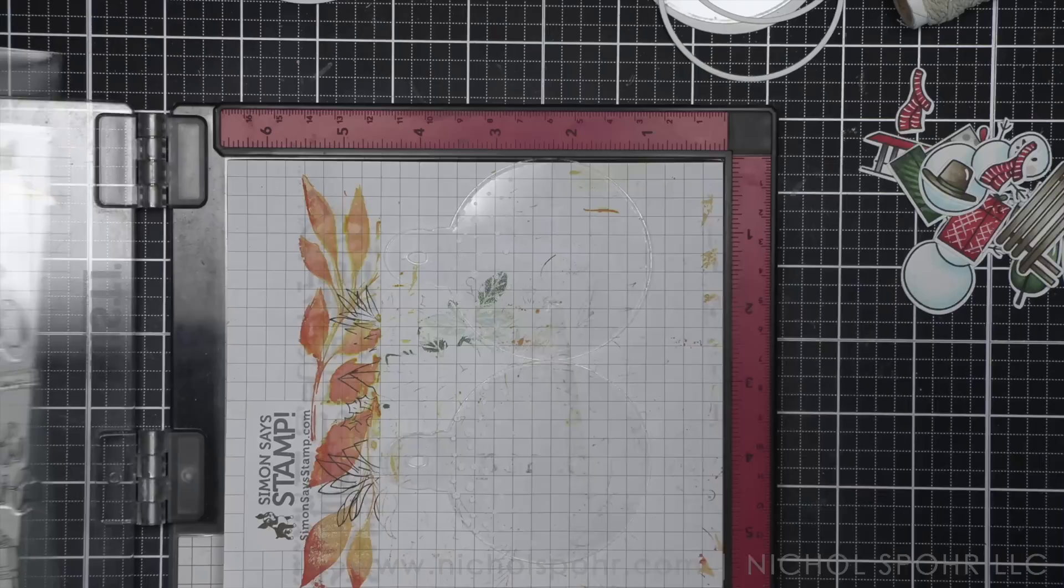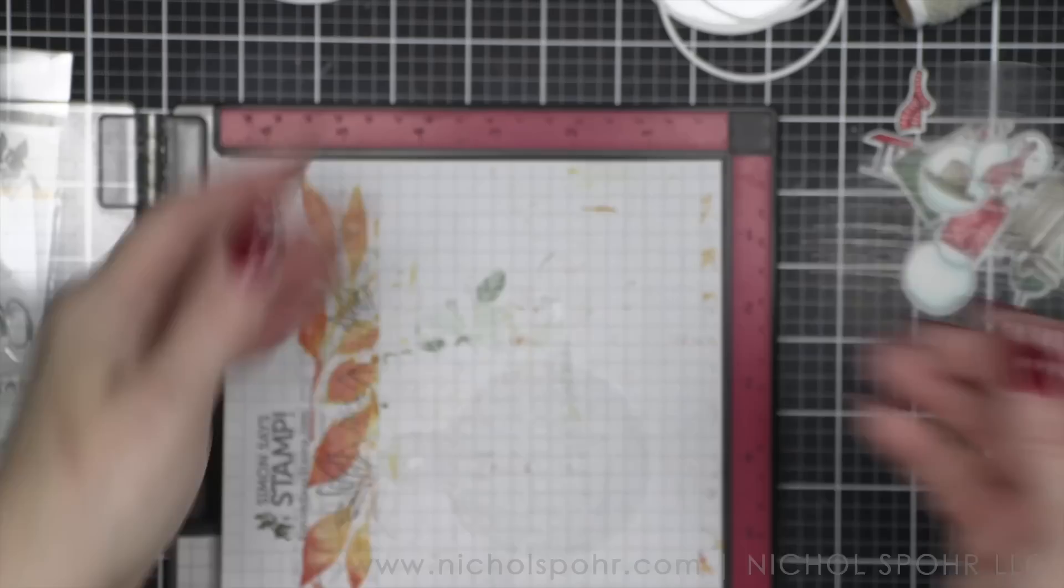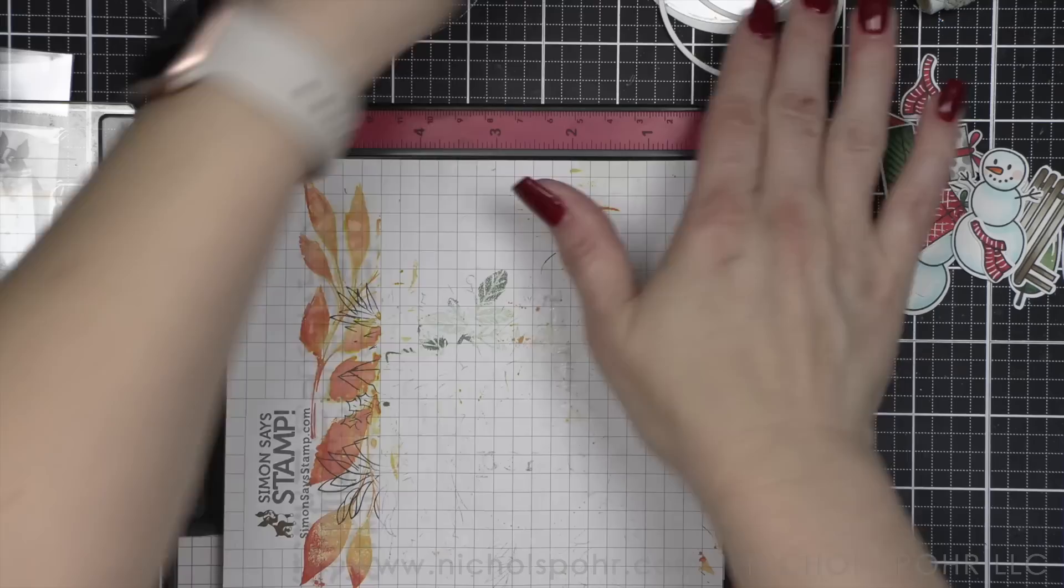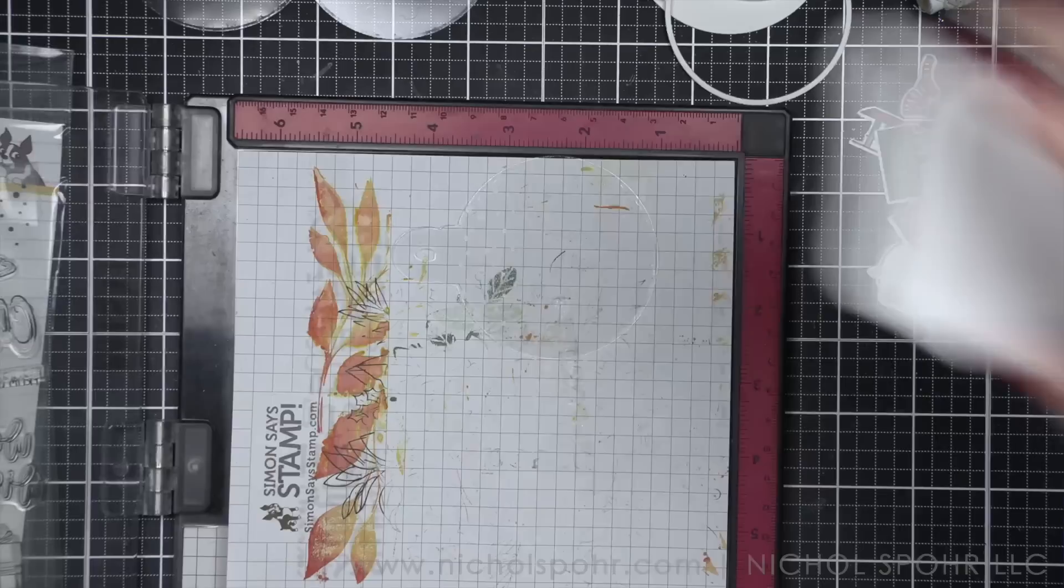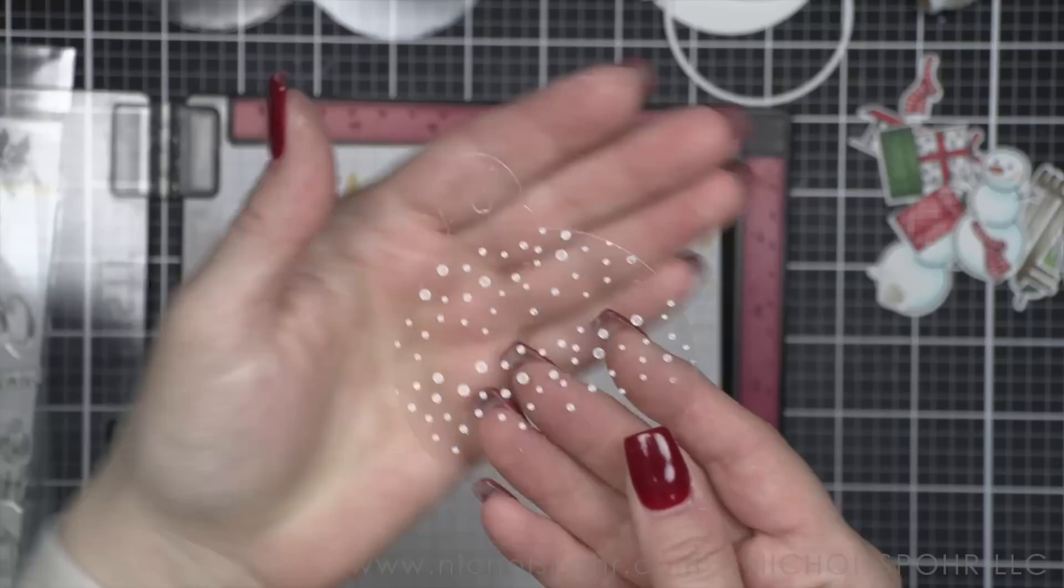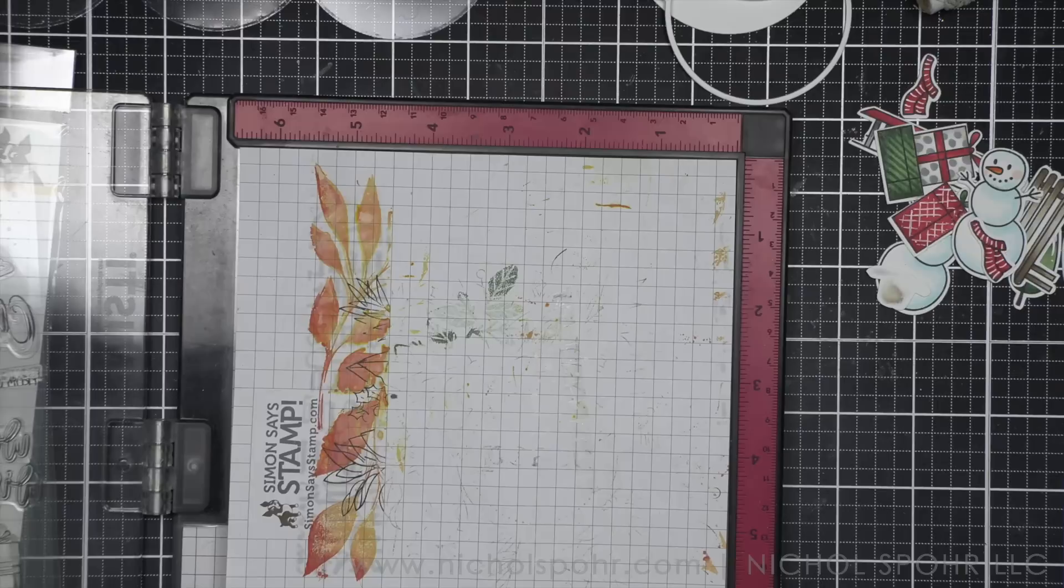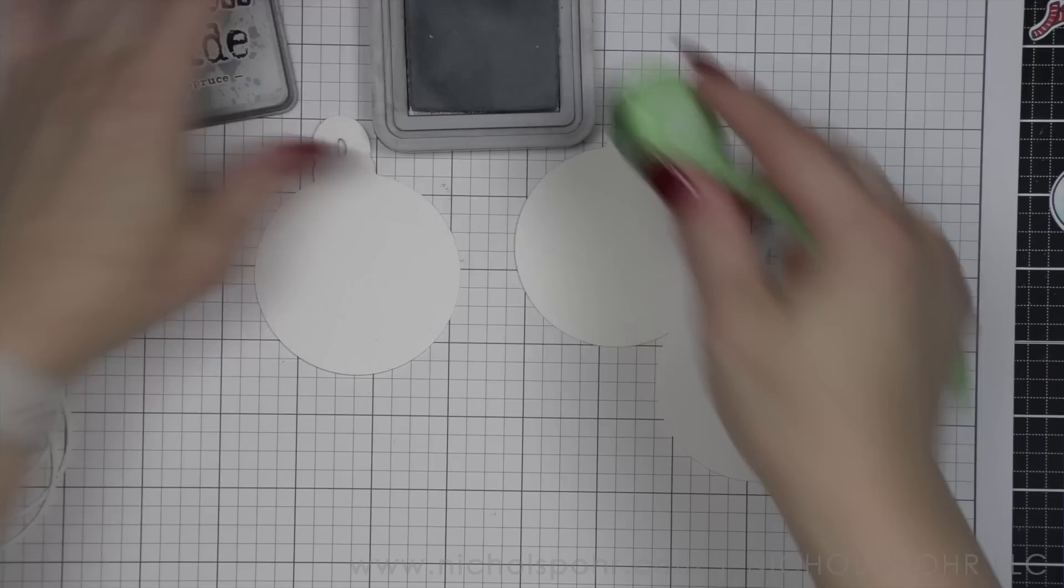On acetate, you are going to have to use a solvent ink so that it dries and does not smear and it will dry instantly. If you make a mistake, you can take stamp cleaner and a microfiber cloth or even like a paper towel and you can remove it. Make sure that your acetate is dry and you can restamp it. It's not going to rub off. It's not going to smear. So make sure you're using a solvent ink like Stazon.